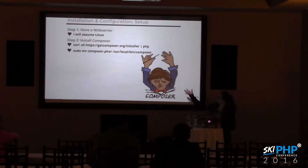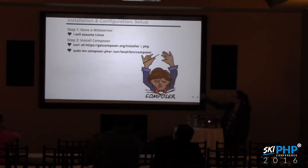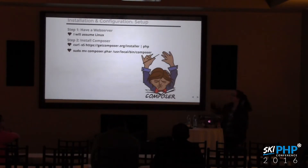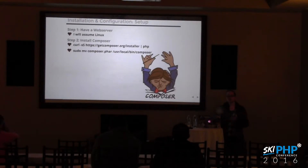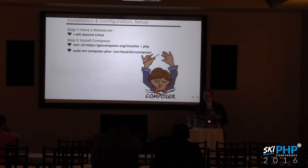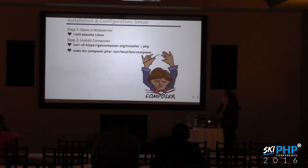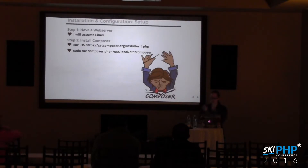Installing Composer is basically two command line commands, assuming you have curl installed. You curl the installer, and then the second line is actually optional — that just makes the Composer install global, so you use 'composer' to trigger a command instead of 'composer.phar'. I prefer that, so I included that second line. It is optional.